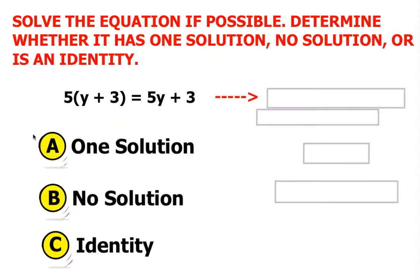So here's our question: 5 times the quantity of y plus 3 is equal to 5y plus 3.